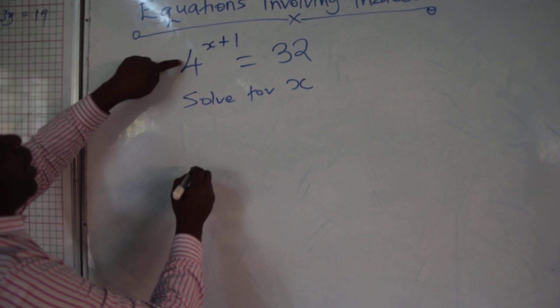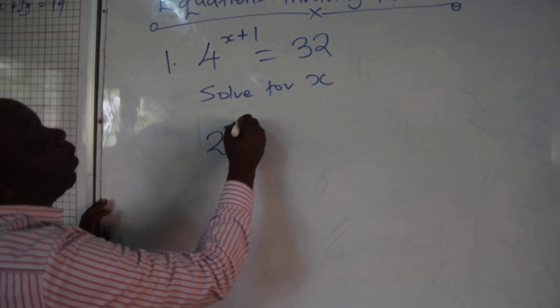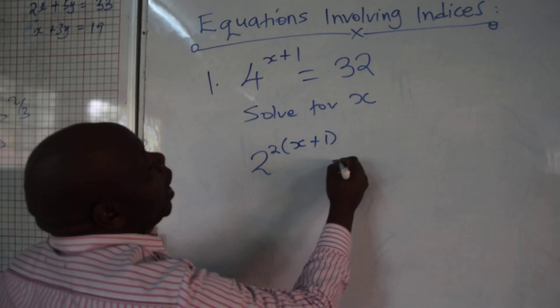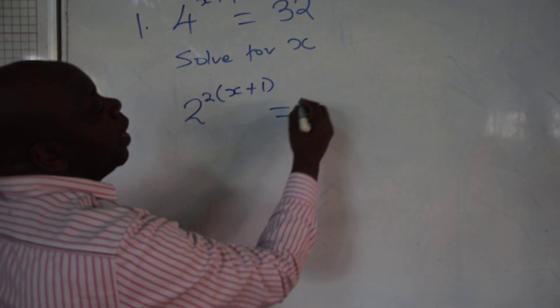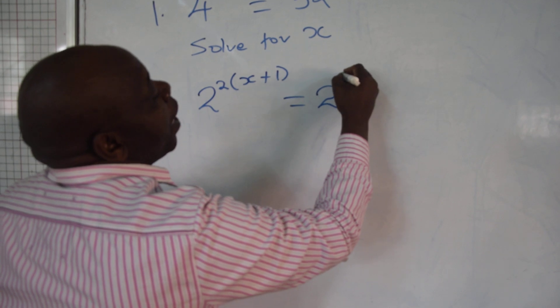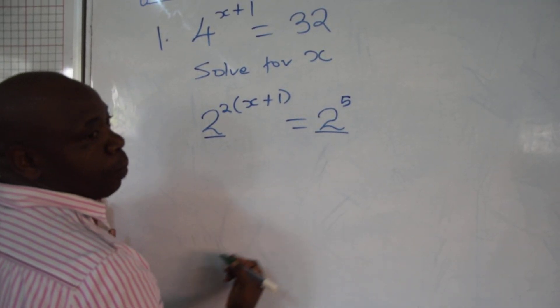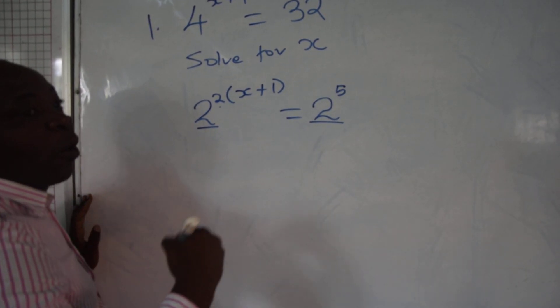Here, you write this 4 in index form, which is 2 power 2, multiplied by the power, which is x plus 1, equals to that 2 in power form is 2 power 5. When the bases are the same, then the powers of the index are also the same.